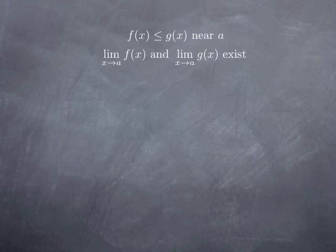Let's assume that we're in a situation where one function g stays above another function f near a. Near a is shorthand to say on some open interval containing a, and by that I mean for every x in that open interval containing a, except possibly at x equal a. And let's assume that both functions have a limit at x equal a.